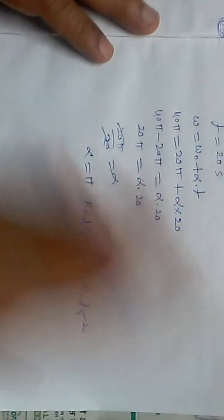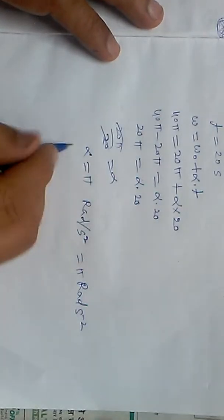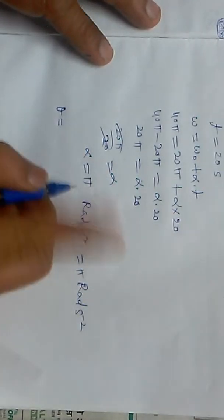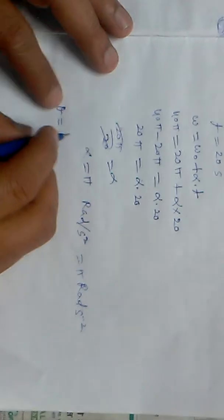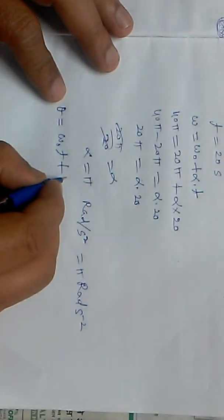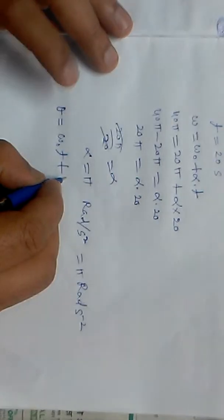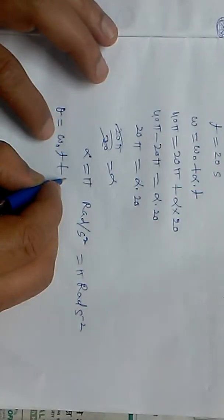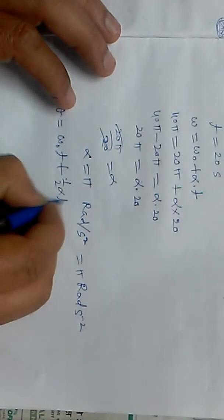The second part asks how many revolutions during this time. We need to find the angle and then the number of revolutions. We'll use the formula for angular displacement.